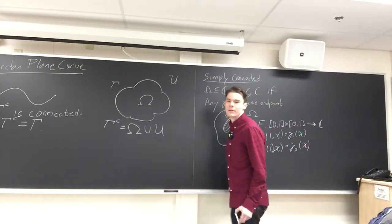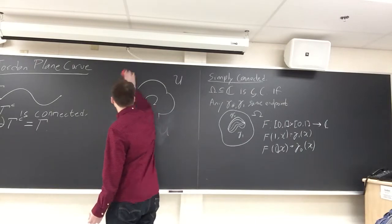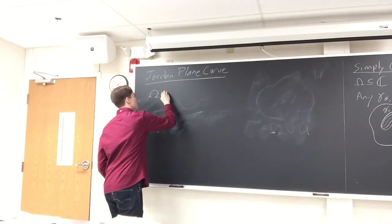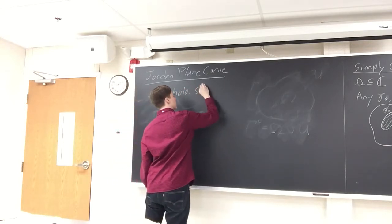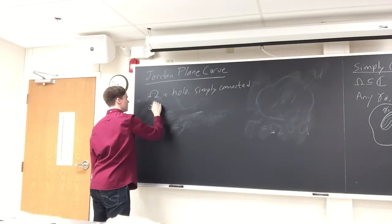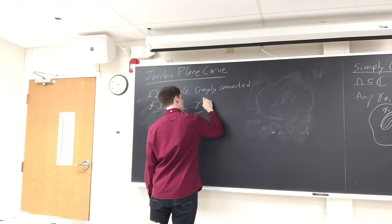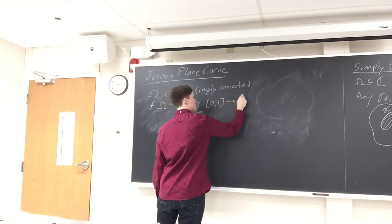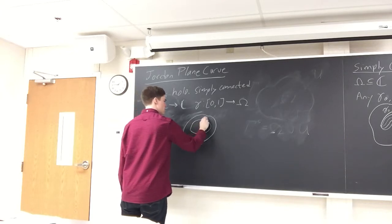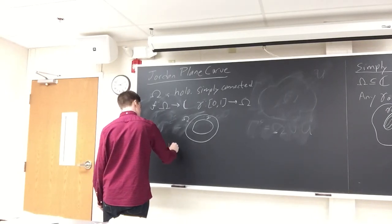To show the Jordan Plane Curve Theorem, we're going to use tools from complex analysis. The first thing we'll do is define what it means to be holomorphically simply connected. We say a set omega is holomorphically simply connected if for any holomorphic function f on omega and any closed curve gamma on omega, the line integral over gamma of f dz equals zero.